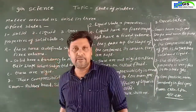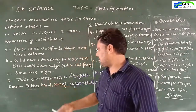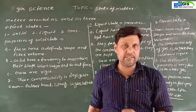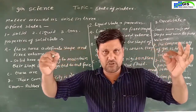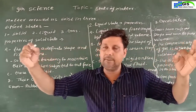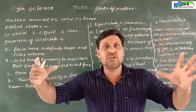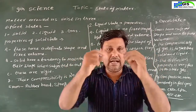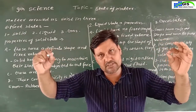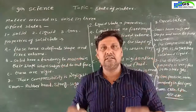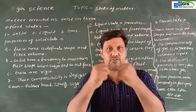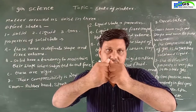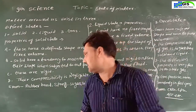اب solid state میں examples دیکھتے ہیں: rubber band, sponge, sugar اور salt۔ Rubber band آپ نے دیکھا ہے — جب آپ اس کو stretch کرتے ہو تو وہ لمبا ہو جائے گا، لیکن جیسے آپ اس کو release کریں گے، فوراً وہ اپنی former shape میں آ جائے گا۔ اگر آپ اس پر زیادہ force apply کرتے ہو تو وہ break ہو جائے گا، کیونکہ اس کے particles کے between force of attraction بہت زیادہ ہے۔ اس لئے release کرتے ہی particles ایک دوسرے کے نزدیک آ جاتے ہیں۔ تو rubber band کیا ہوتا ہے؟ Solid ہوتا ہے۔